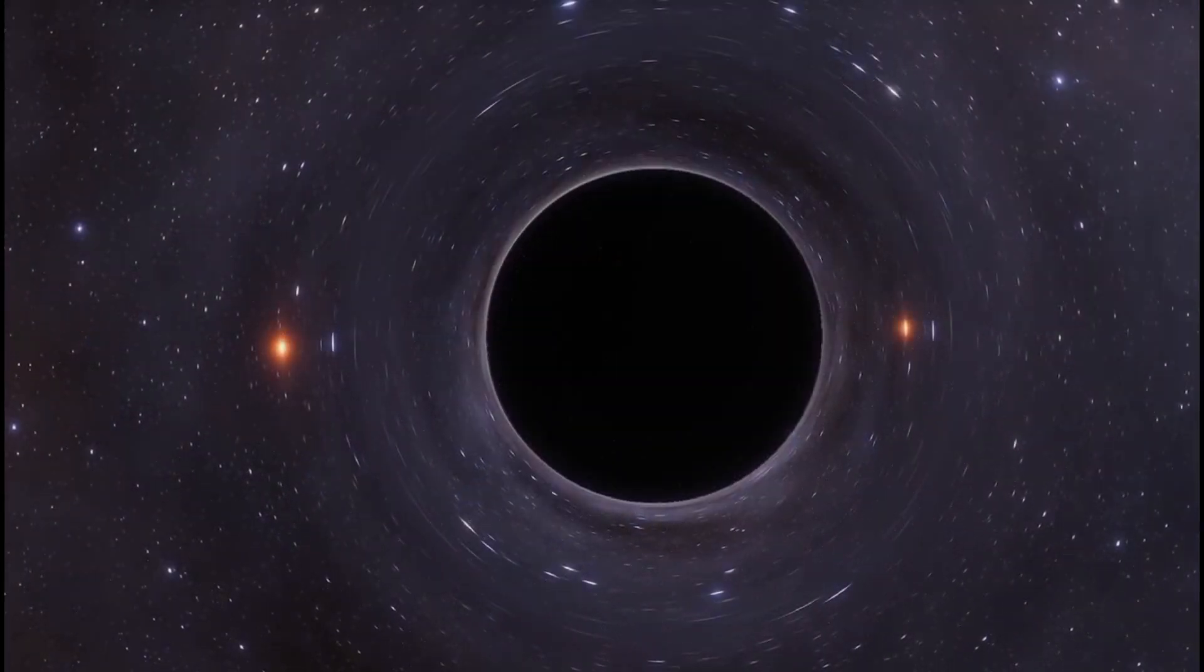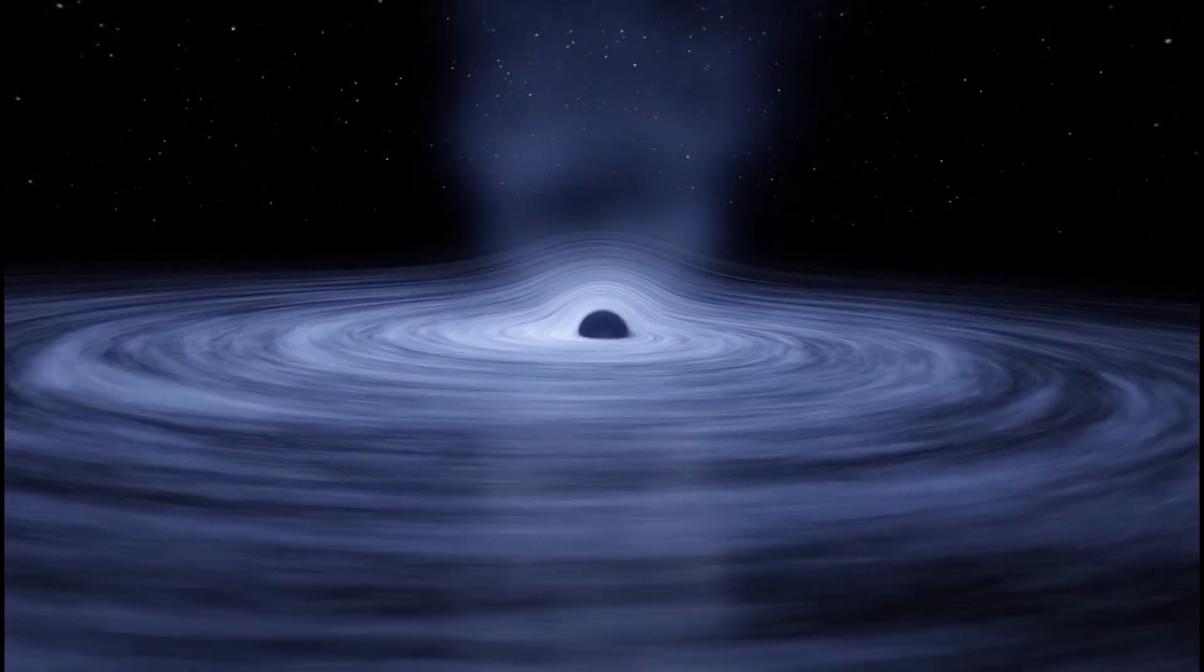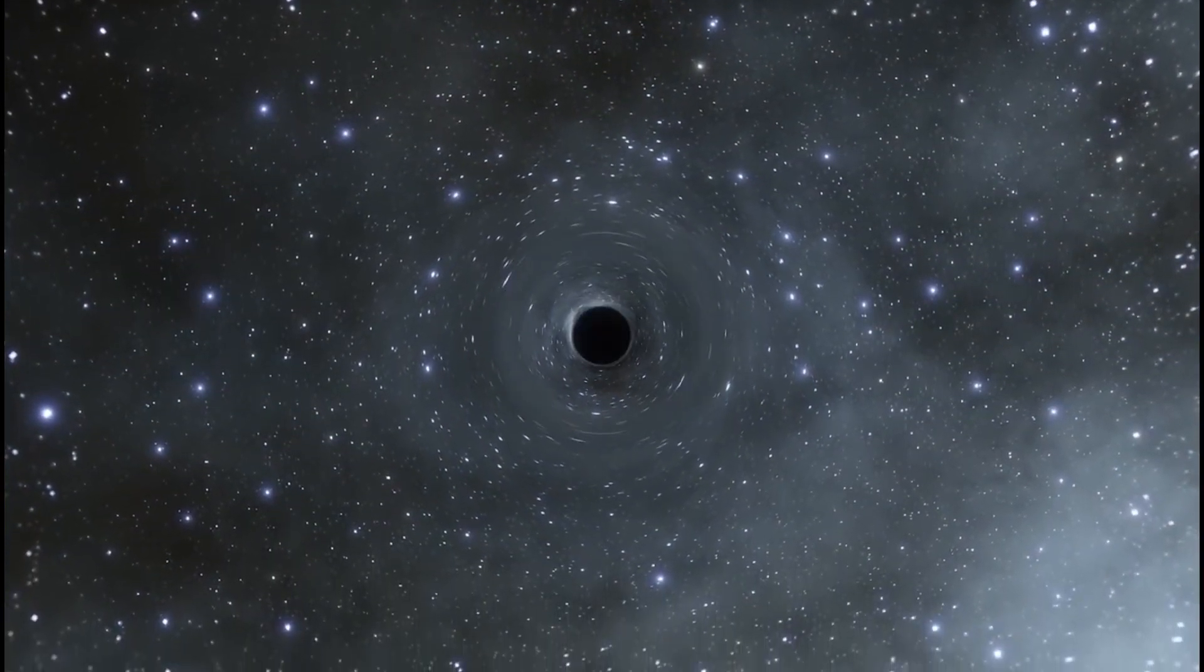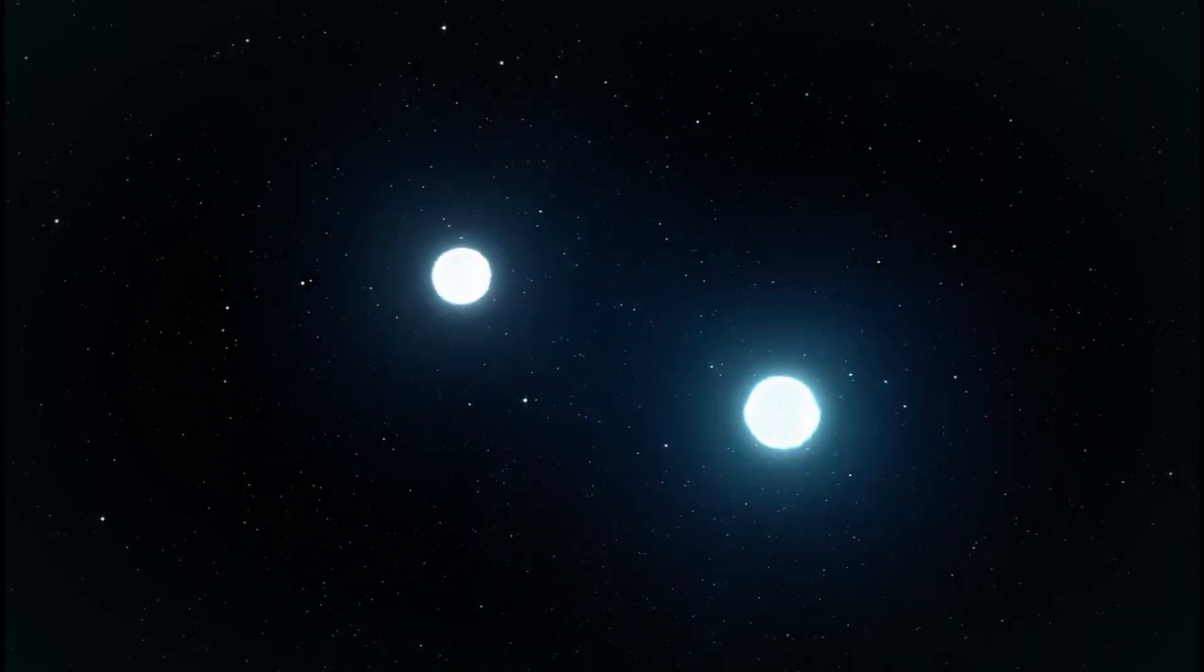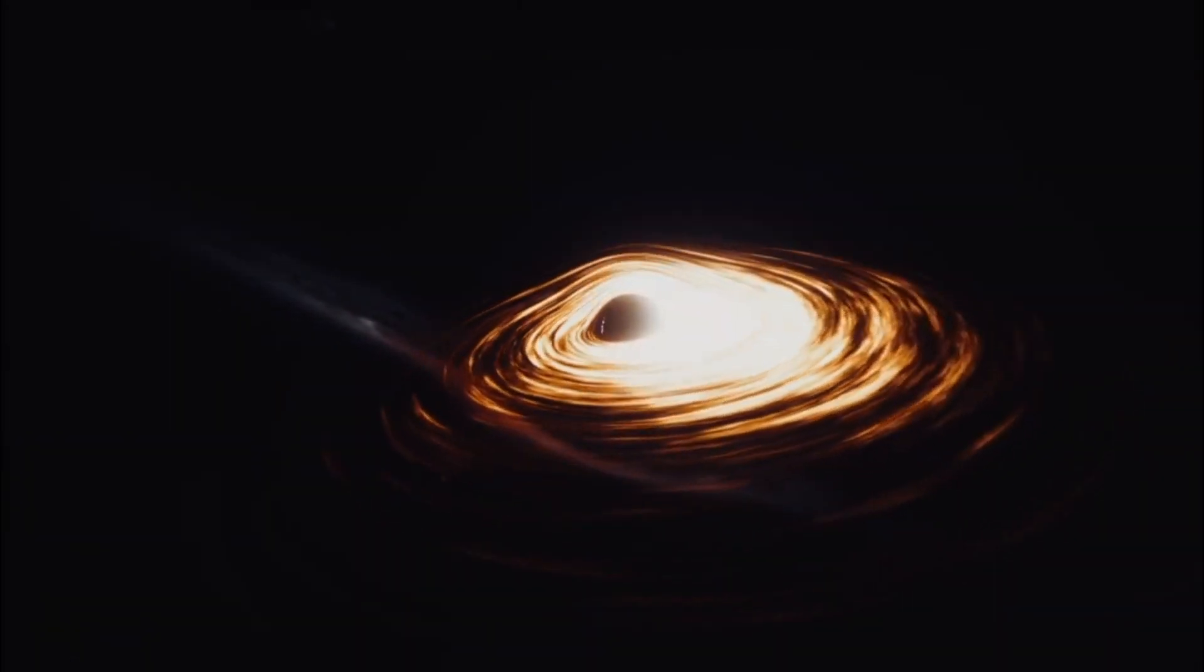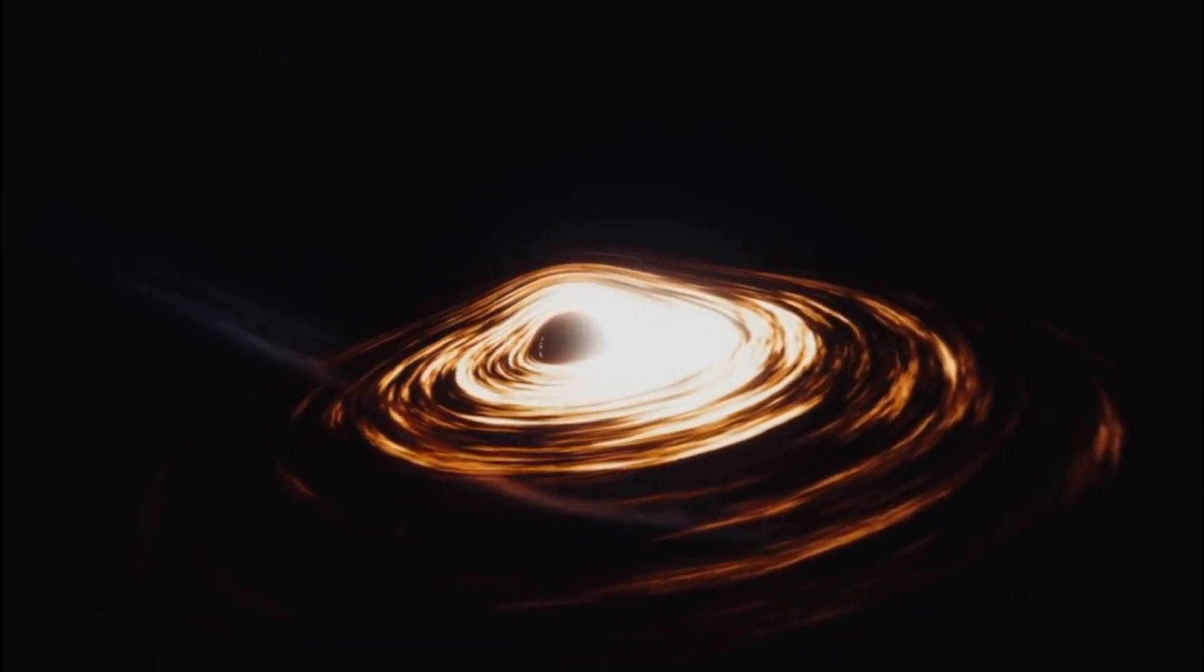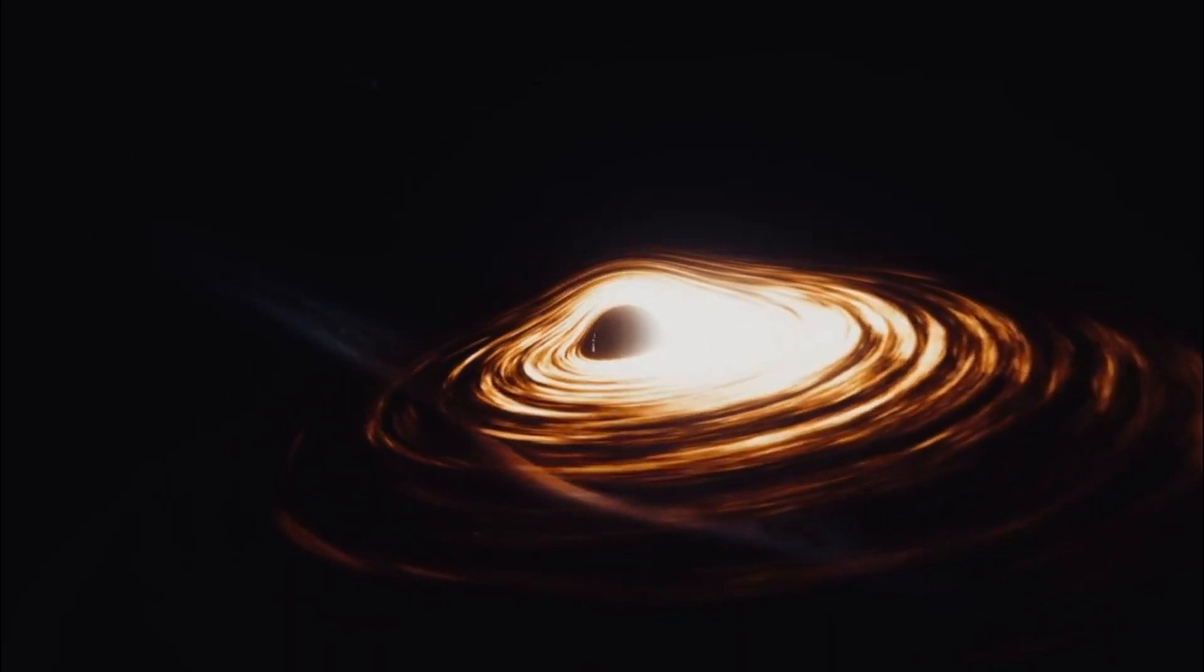In this video, we explored the fascinating relationship between supermassive black holes, their powerful jets, and nova explosions. We learned how jets emitted from these colossal black holes can interact with surrounding gas and dust, potentially triggering explosive events in nearby binary star systems. This connection highlights the intricate dynamics of the universe, where massive structures influence smaller stellar phenomena, reshaping our understanding of cosmic events. We also discussed how black hole jets can affect their environments, leading to new theories about the interplay between black holes and stellar evolution. These findings not only deepen our knowledge of individual cosmic events, but also emphasize the interconnectedness of the universe.